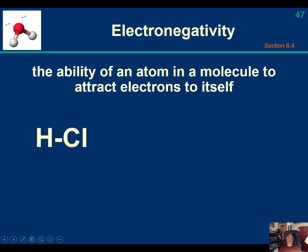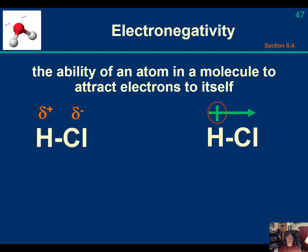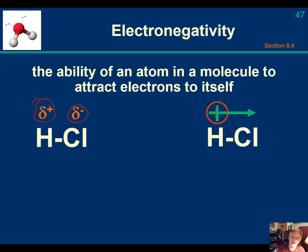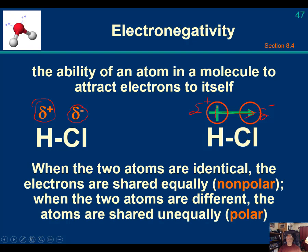Electronegativity by definition is the ability of an atom in a molecule to attract electrons to itself. There are two ways we can describe bond polarity: using lowercase delta-plus and delta-minus symbols, or drawing an arrow with a cross at the positive end pointing toward the negative side. Both represent polar covalent bonds. When two atoms are identical, electrons are shared equally — that's a nonpolar bond. When two atoms are different, electrons are shared unequally, and we call it a polar bond.